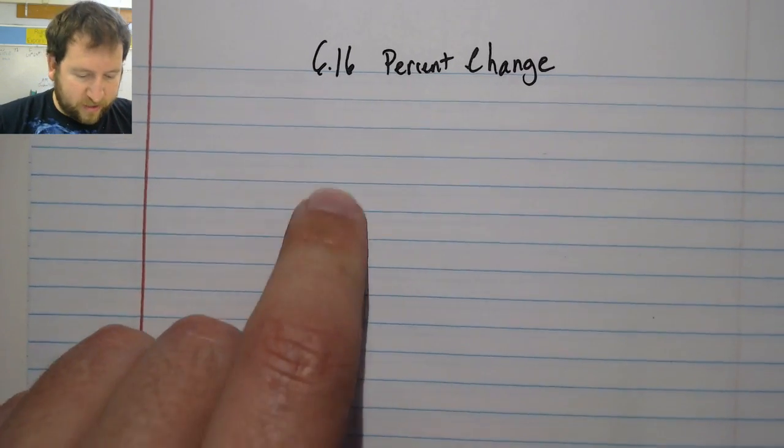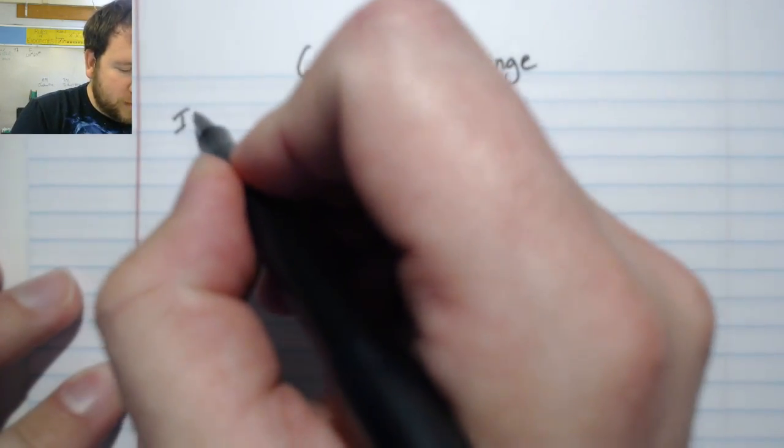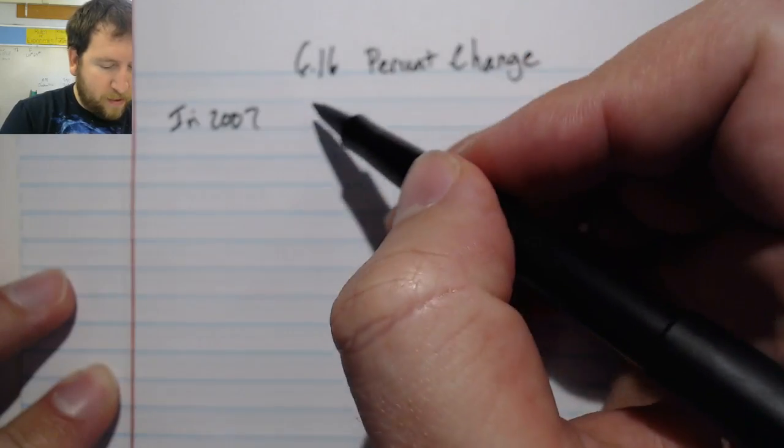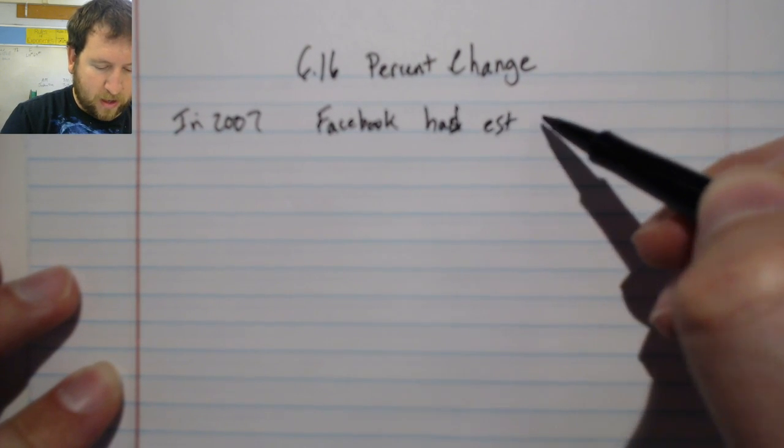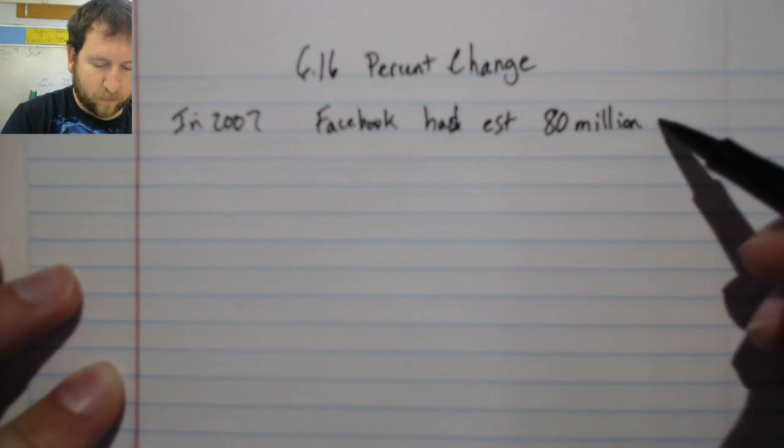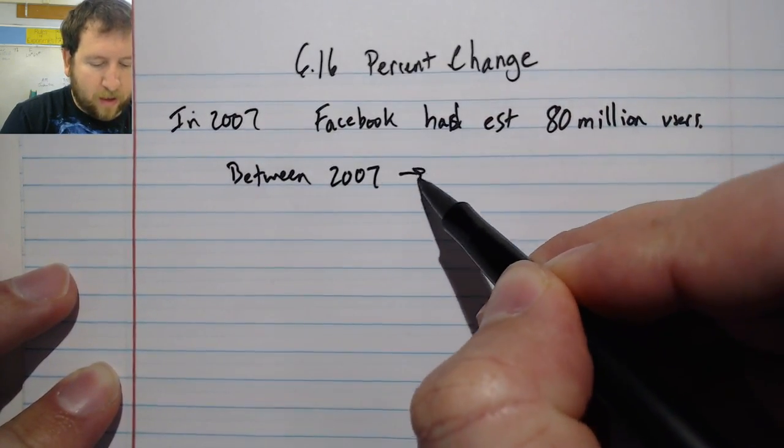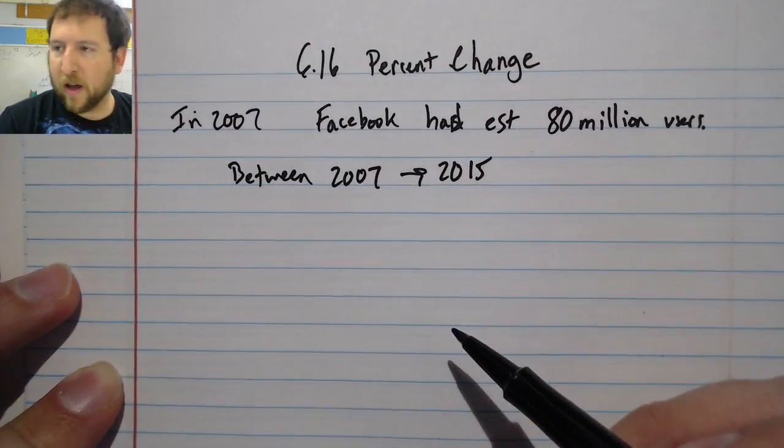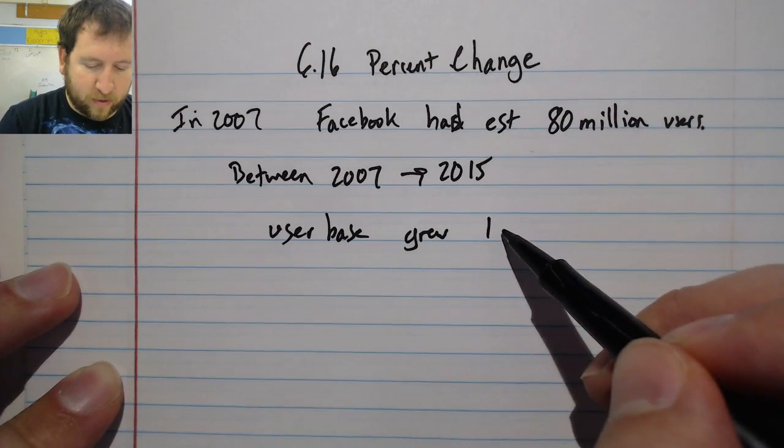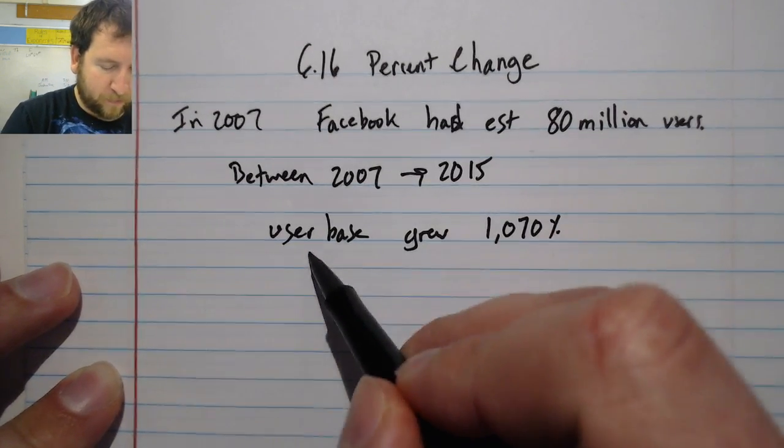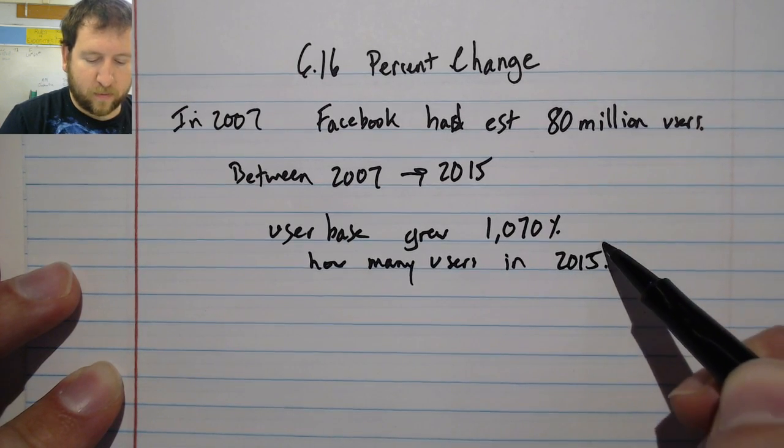All right, today we're going to talk about section 6.16 and it's called percent change. Let's take a look at an example. In 2007, Facebook had an estimated 80 million users. Between 2007 and 2015, the user base grew 1,070 percent. How many users in 2015? Today we're going to be talking about percent changes just like this.